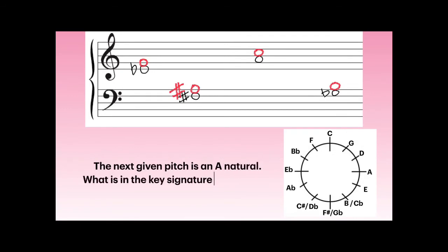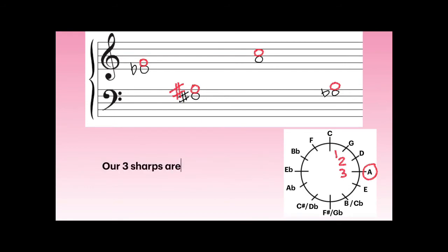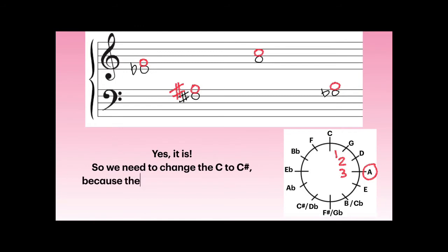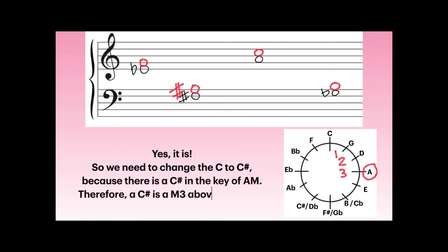The next given pitch is an A natural, and we've written a C above it. What is in the key signature for A major? We find it on our circle of fifths — it has three sharps. What are the first three sharps in our order of sharps? F, C, and G. Is C one of those sharps? Yes, it is. So we need to change the C to C-sharp because there is a C-sharp in the key of A major.